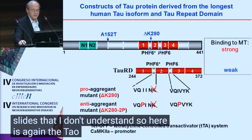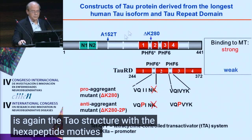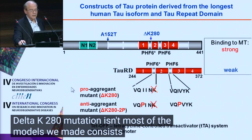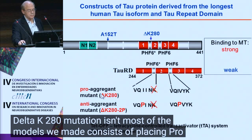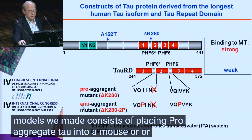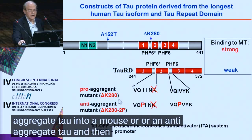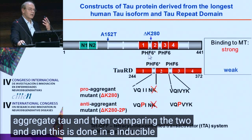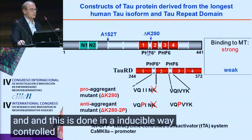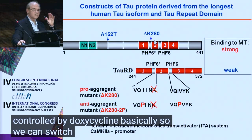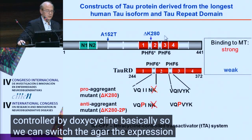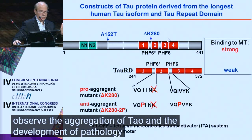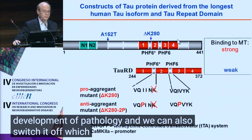A few words about transgenic animals. Here again is the tau structure with the hexapeptide motifs, showing where the delta K280 mutation is. Most of the models we made consist of placing pro-aggregant tau or anti-aggregant tau into a mouse and then comparing the two. This is done in an inducible way, controlled by doxycycline, so we can switch the expression of tau on, observe the aggregation and development of pathology, and also switch it off.